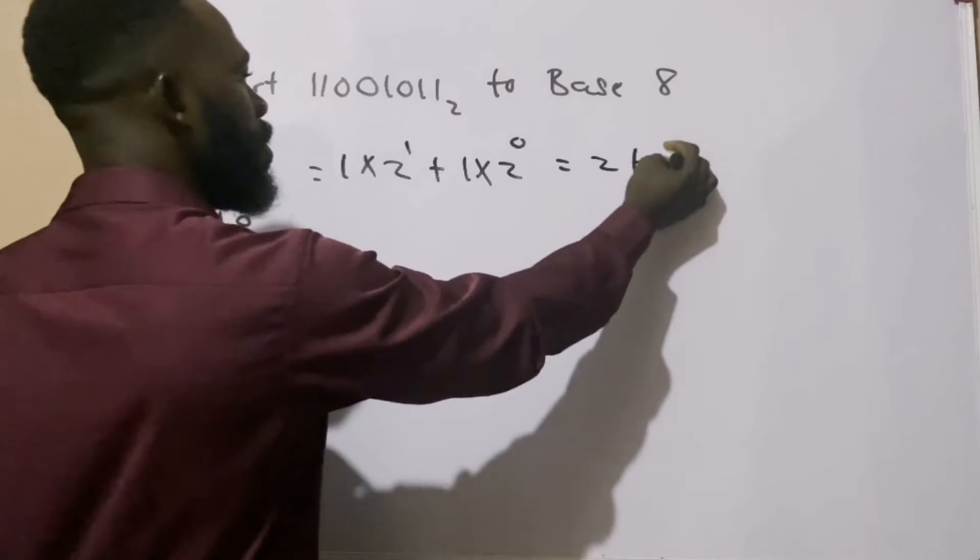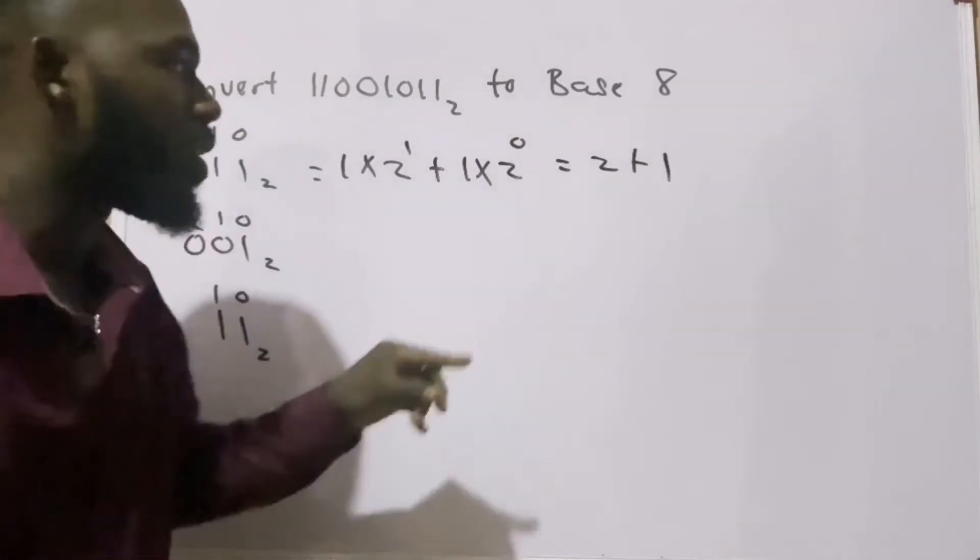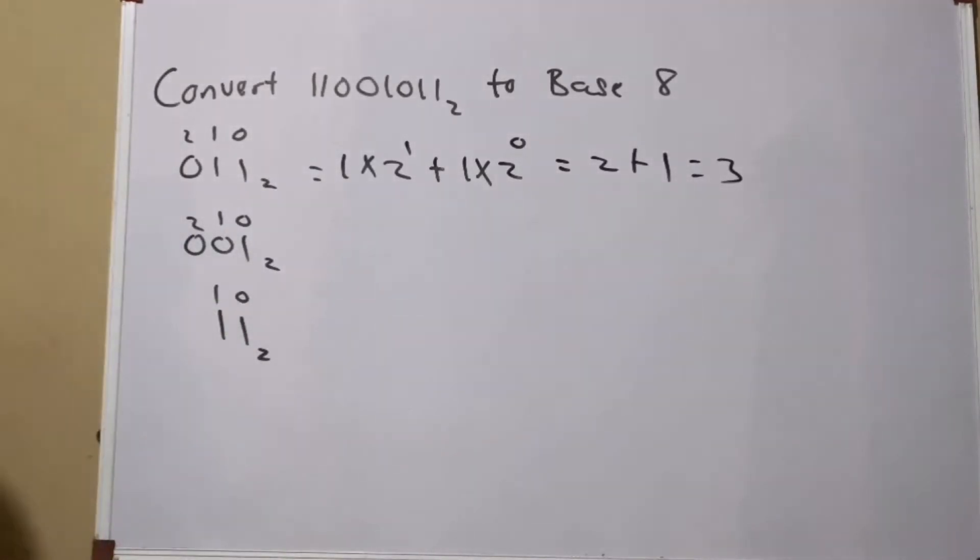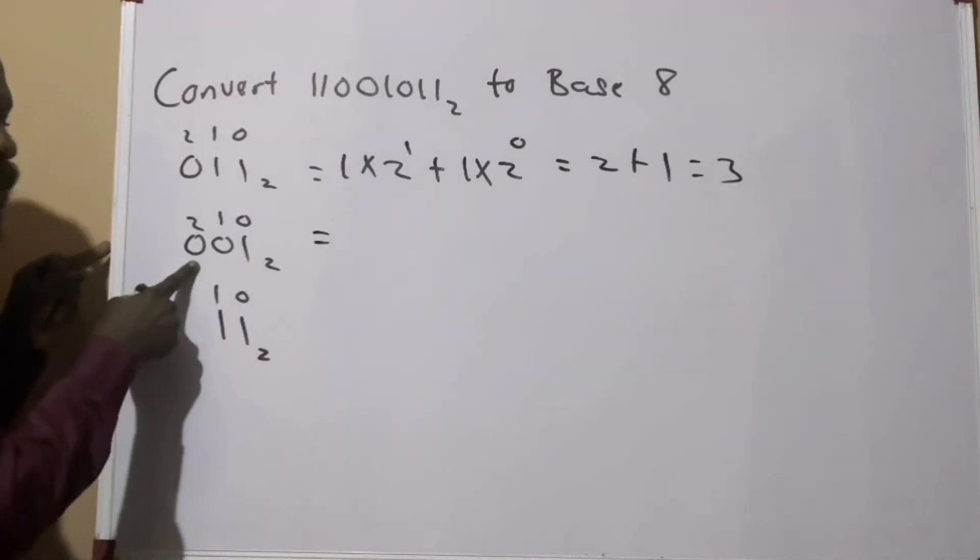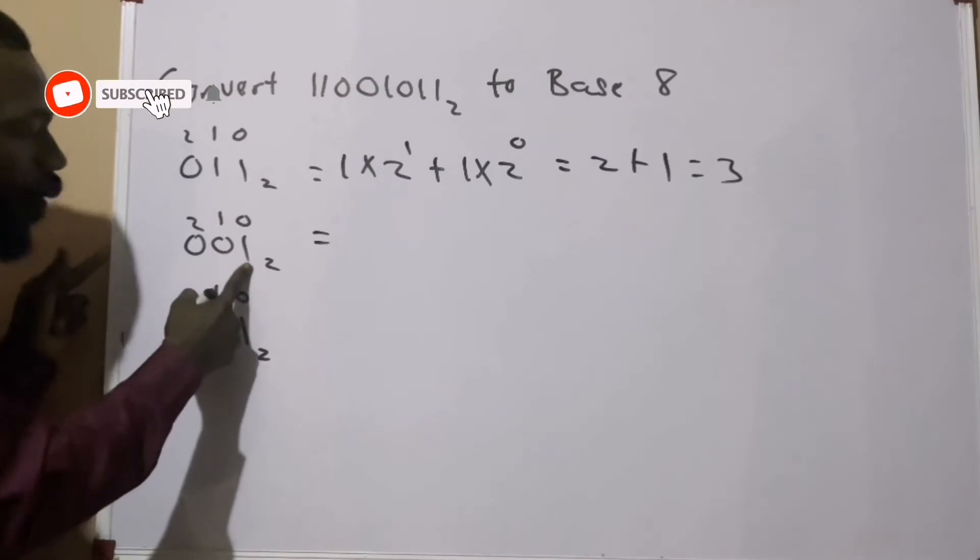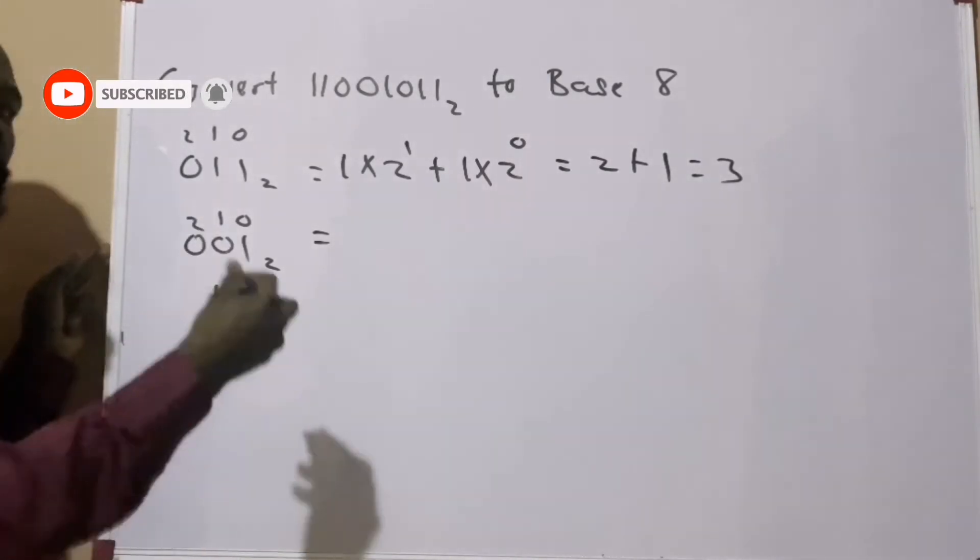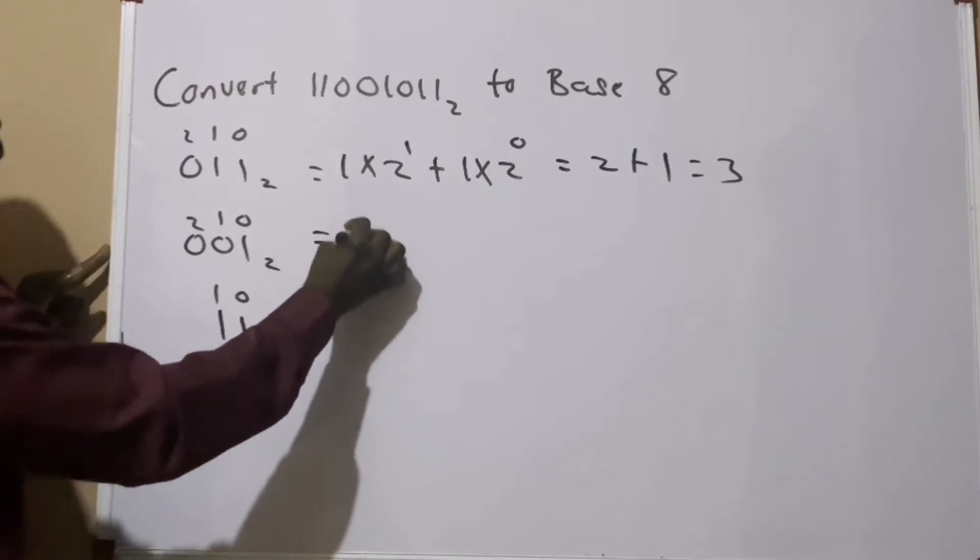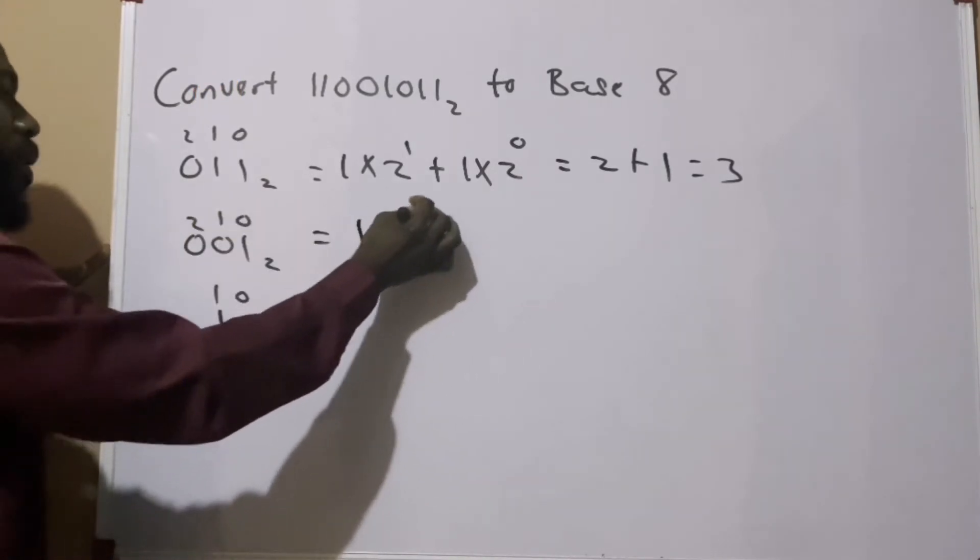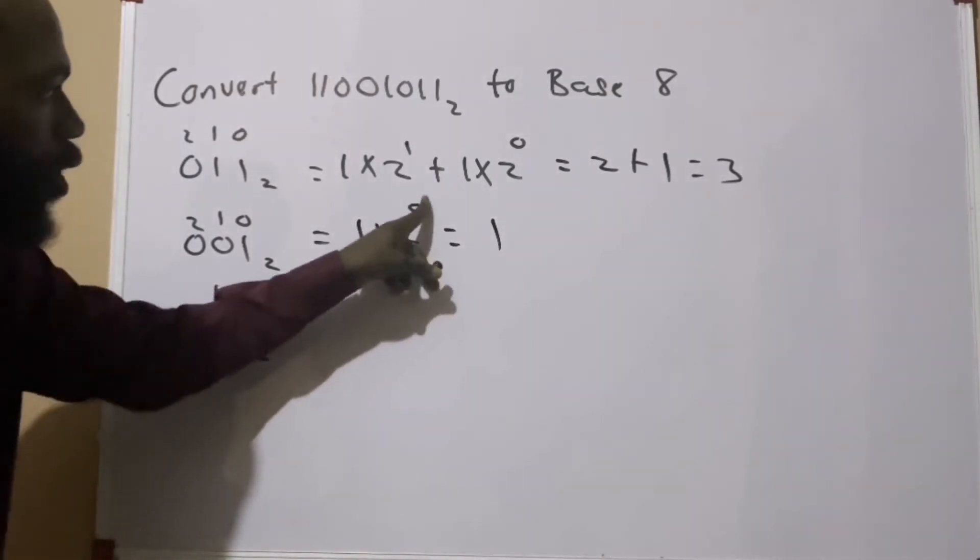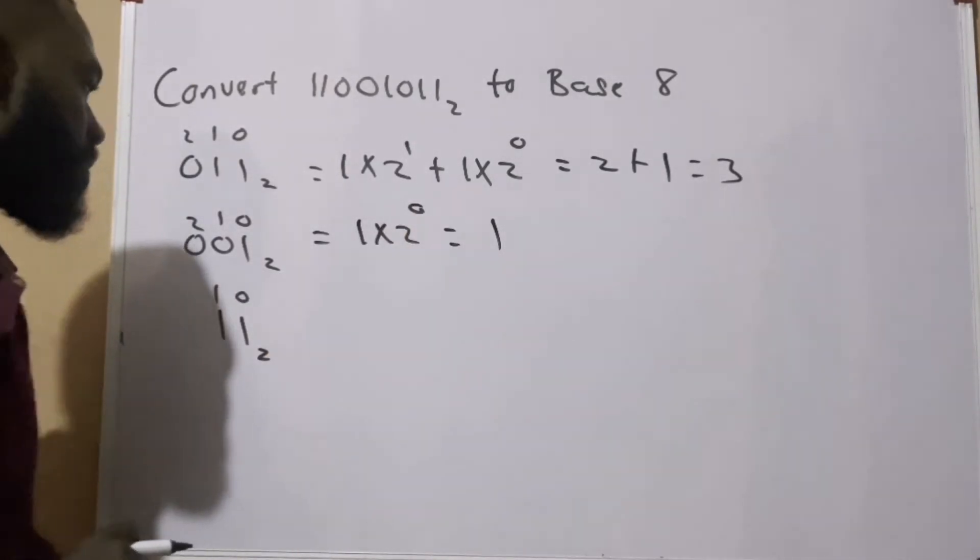Also here, I don't need to work with zero, I only need to work with one. Here becomes 1 times 2 raised to the power of 0, and that will give us 1 because 2⁰ is 1.